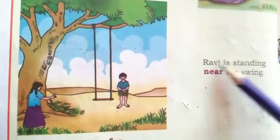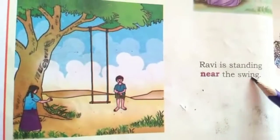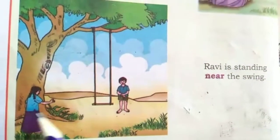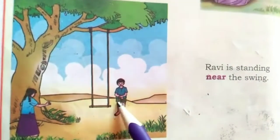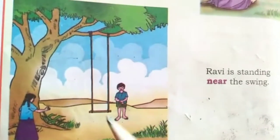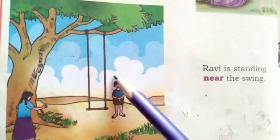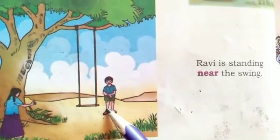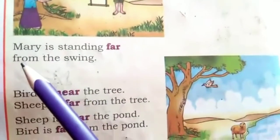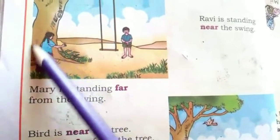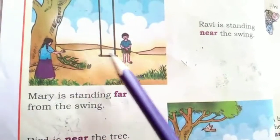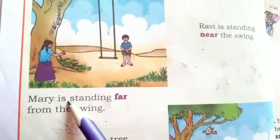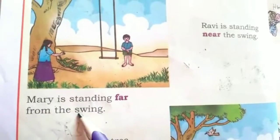Come down. Ravi is standing near the swing. There are two children playing near the swing — Ravi is standing just near the swing. Mary is standing far from the swing — so where is Mary standing? She is standing far away from the swing.